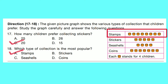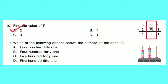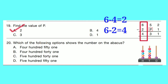Question number 19: Find the value of P. This is a subtraction: 5 minus P equals 3. To get P, we subtract 3 from 5. 5 minus 3 equals 2. Option A is correct: 2. In a subtraction, subtracting one number from the sum, we can get the other number.